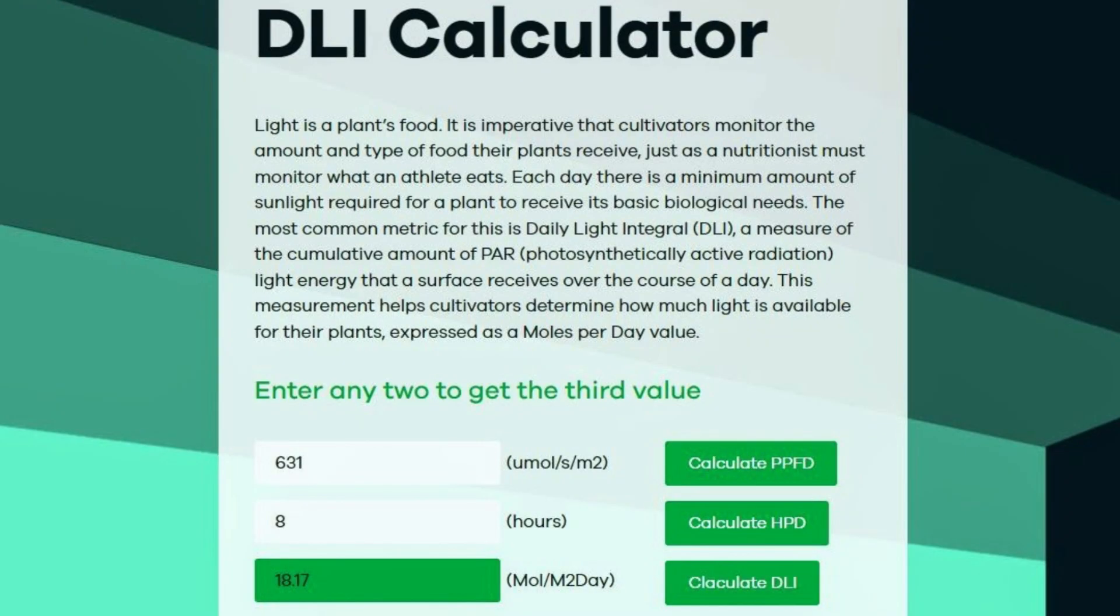I took the original reading, that 631 on the PPFD, and I reduced the total number of hours of day, found that I could run that light for about eight hours a day and still hit around 18 DLI, which is just a little beyond the optimal DLI for things like lettuce and a lot of your cool season crops.